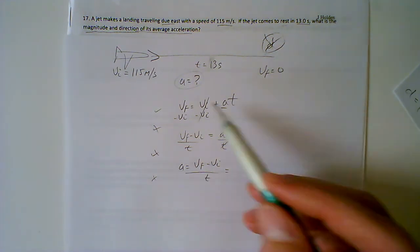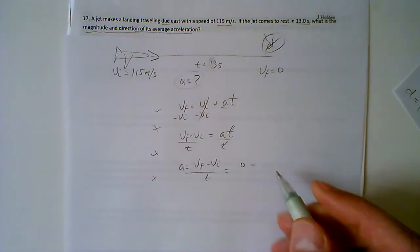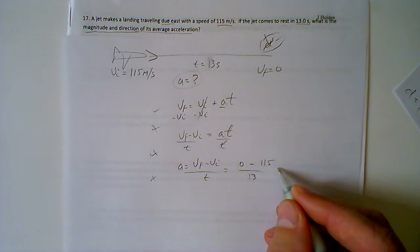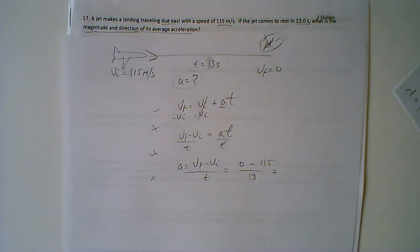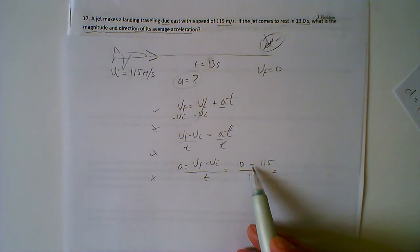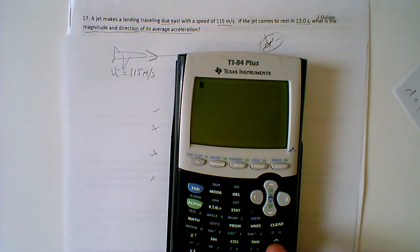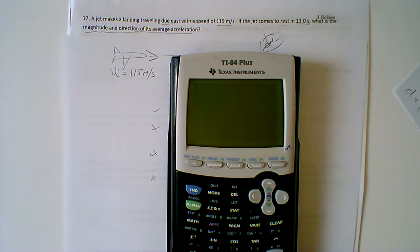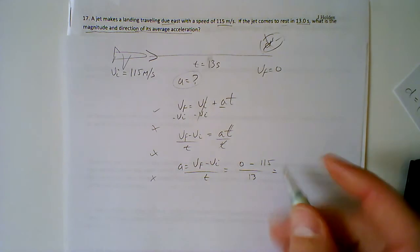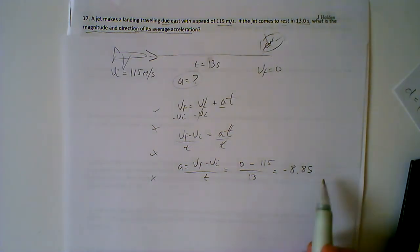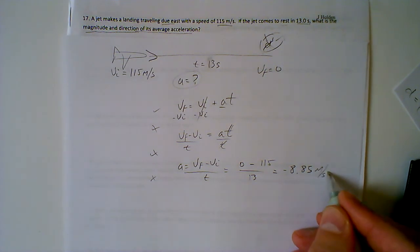When we plug our numbers in, VF is 0 minus 115, and the time it takes is 13 seconds. We assume it's going to be a deceleration because it's coming to rest. So in the calculator: negative 115 divided by 13. We get an answer of negative 8.85, rounded. And that's going to be meters per second squared.